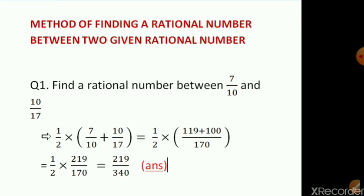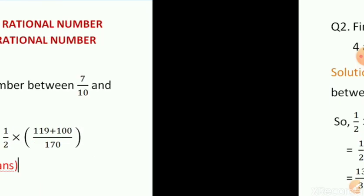In the next step we have written 1 by 2 into 219 by 170. Multiplying 1 into 219 we get 219, and 2 into 170 is 340. Since there is no common divisor, 219 upon 340 is our answer.